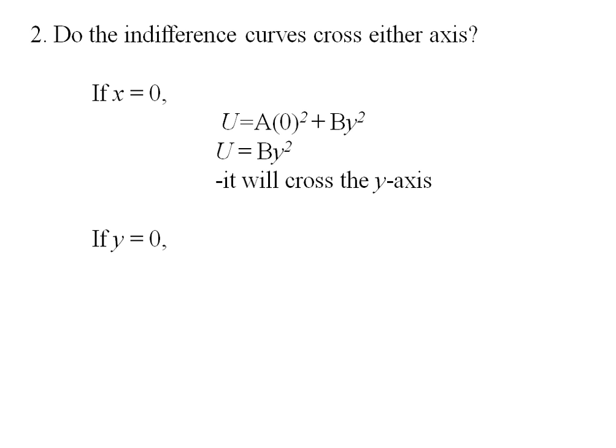Now, if y equals 0, I'm looking for whether or not it crosses the x axis. I plug in 0 for y and utility is ax squared, which is a positive value, so I know I will cross the x axis. So yes, this indifference curve actually crosses both x and y axis.